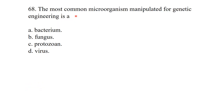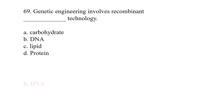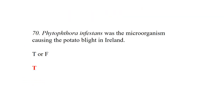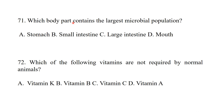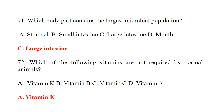The most common microorganism manipulated for genetic engineering is bacteria. Genetic engineering involves recombinant DNA technology. Phytophthora infestans was the microorganism causing the potato blight in Ireland. Which body part contains the largest microbial population? It is the large intestine. Which of the following vitamins is not required by normal animals? Vitamin K — it is responsible for blood clotting.